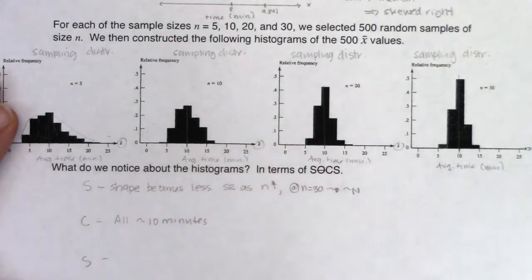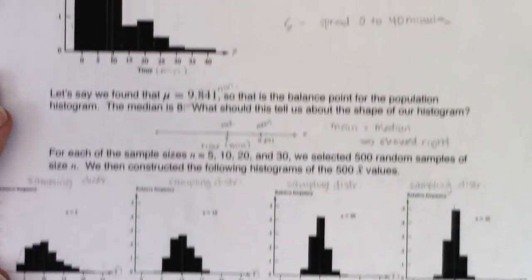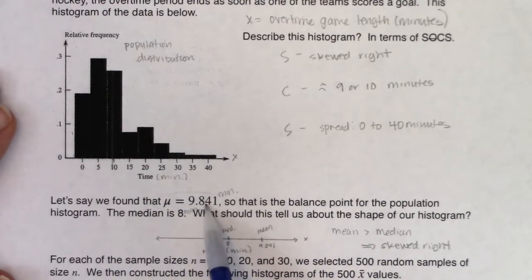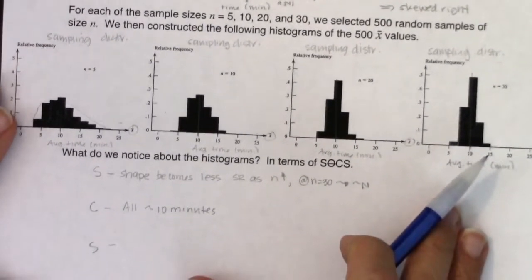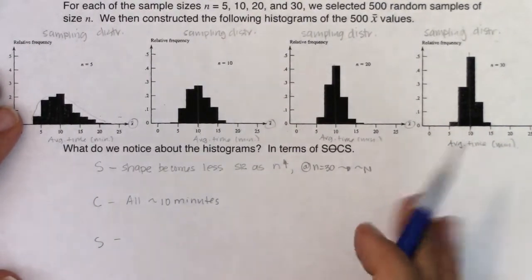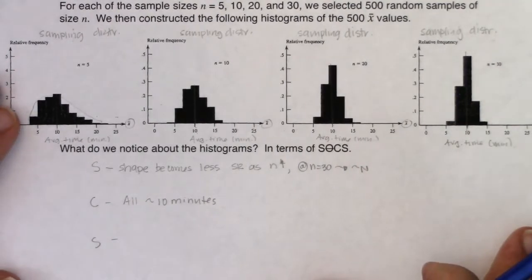Let's think about that. If we go back to our population distribution, the center was pretty close to 10 minutes. And for our sampling distributions, the center was staying pretty close to 10 minutes. So whatever we saw in the population, the center stayed about the same.